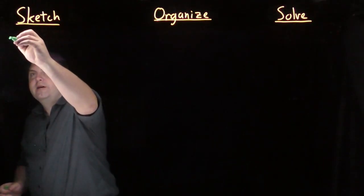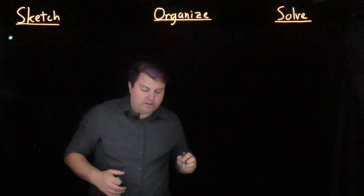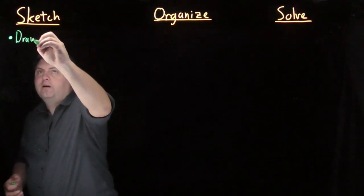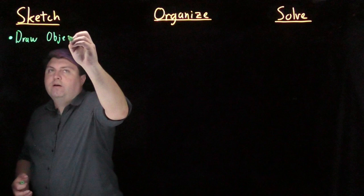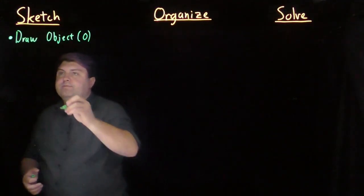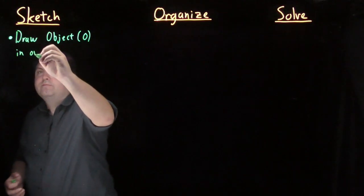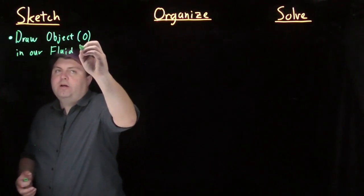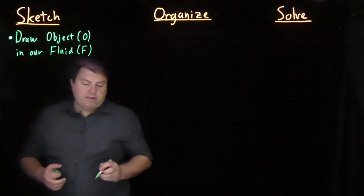So we're going to start by making sure that we're very, very clear on this. We want to draw our object, which we're going to label with O, in our fluid, which we're going to label with F.